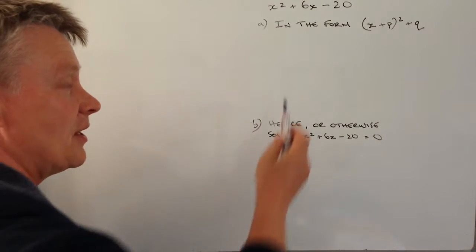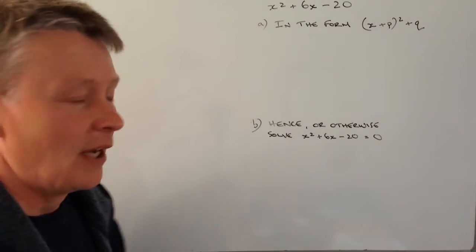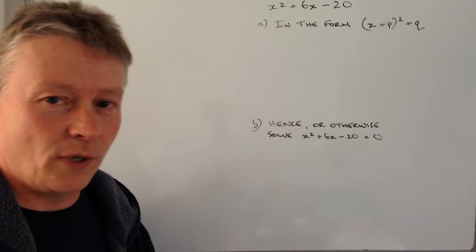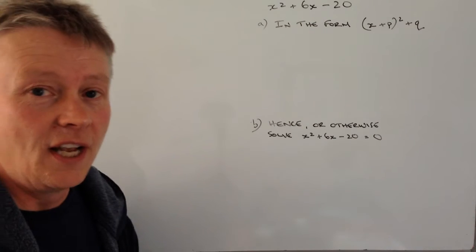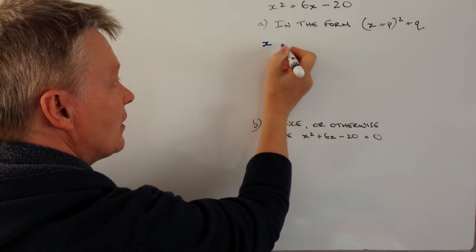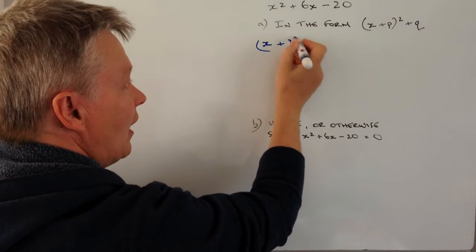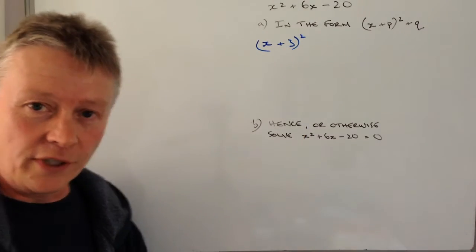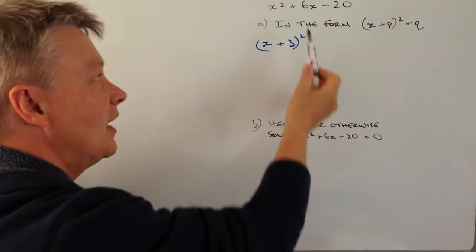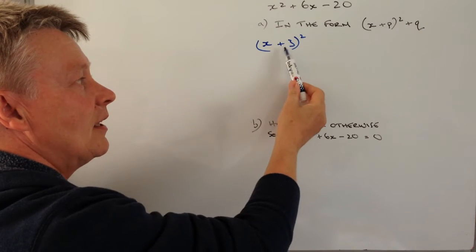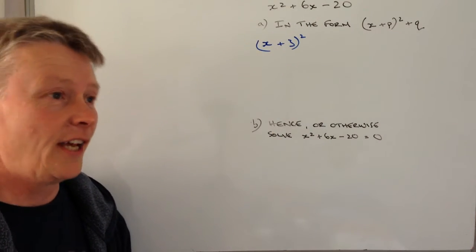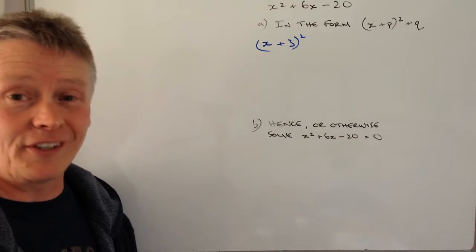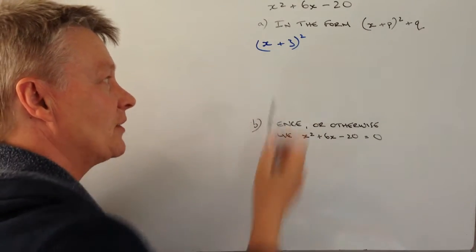So the first thing is putting this in the form. The easiest way is to take the first bit of the equation and change it to (x + 3)². What you need to do is take this number 6 and half it. So if it's a plus 6, half it's a plus 3. If it's a minus 8, half it's a minus 4, and then square it.